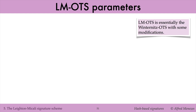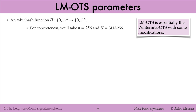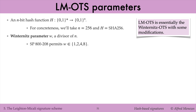The Leighton-Macaulay one-time signature scheme is essentially a modified version of Winternitz's OTS. It uses the same parameters as Winternitz's. H is an n-bit hash function; for concreteness, we'll take H to be SHA-256, so N is 256. In SP800-208, the Winternitz parameter W is restricted to values 1, 2, 4, or 8. This means that hash chains have length 1, 3, 15, or 255, respectively.